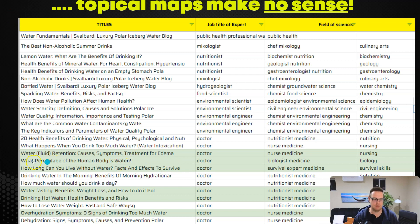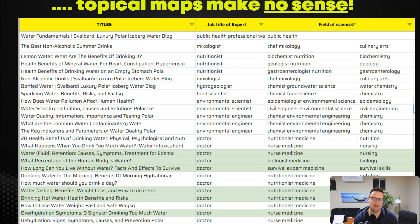I've highlighted in green the articles where Svalbardi is doing exceptionally well — where they have featured snippets or are ranking in very high positions. Things like 'fluid retention' and 'how long can you survive without water' — these are not questions I would typically trust a water bottling company with. Essentially they take water from icebergs, put it in a bottle, and ship it to you. Why would they know how long you can survive without water? It doesn't make sense to us humans, but to a search engine it does, due to the knowledge graph configuration.